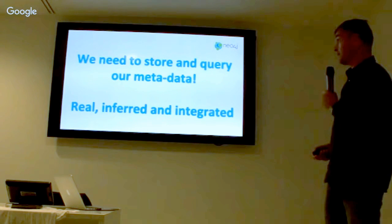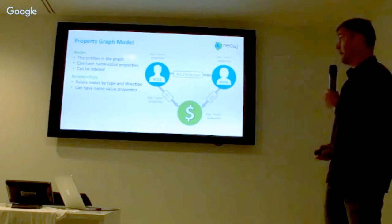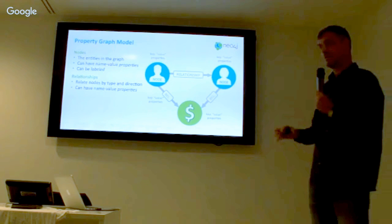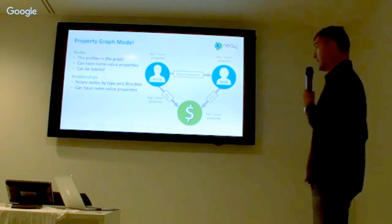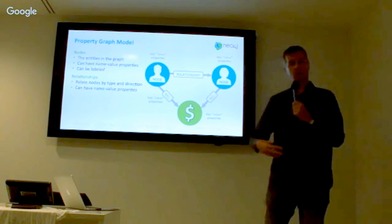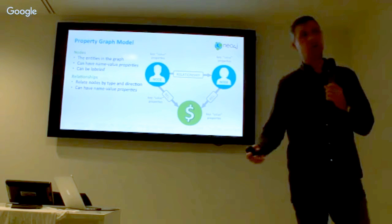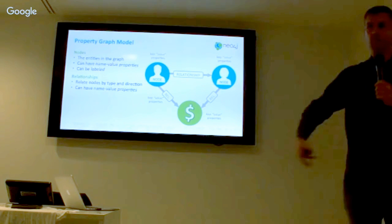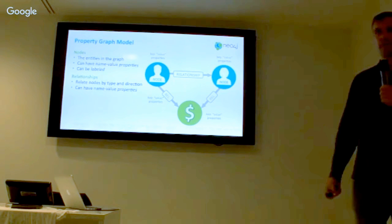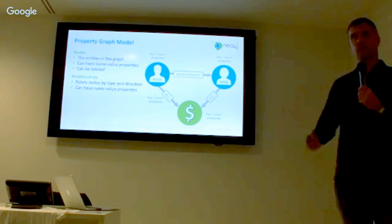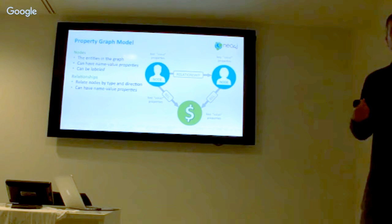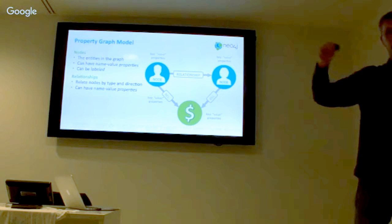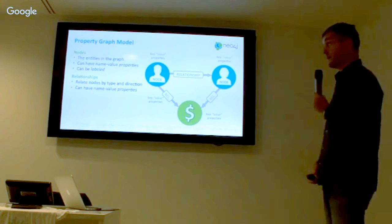What we need is something to store and query our metadata — that's Neo4j. The highlights: it's about a property graph model, which is different from other graph models. Two important things: properties — which if you come from the relational world are comparable to attributes — they contain the content. And labels are classification in your graph. In a big graph where everything is connected, you need a label to classify: this is a person, this is a building, this is an account.